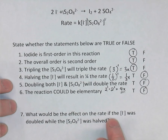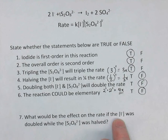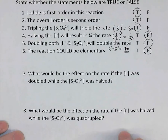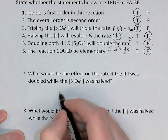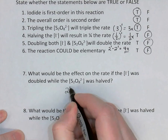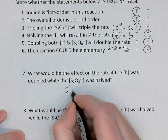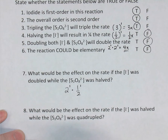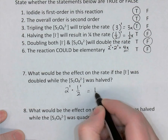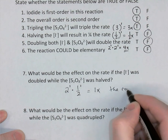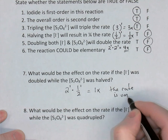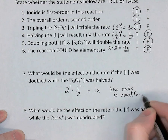What would be the effect on the rate if iodide was doubled and S₂O₈ was halved? Both are first order. Doubling the iodide: 2 to the power of 1 — doubles the rate. Halving the S₂O₈: (½) to the power of 1 — halves the rate. So 2 times one-half equals 1, meaning the rate is unaffected.